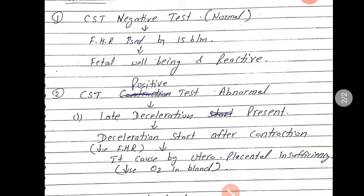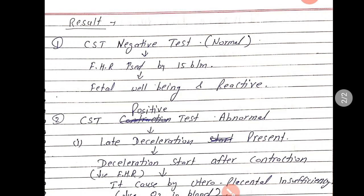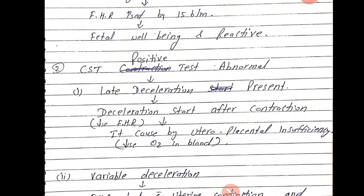CST has two results: first, CST negative test or normal; second, CST positive test or abnormal. In the CST negative (normal) result, fetal heart rate increases by 15 beats per minute during contractions, which is a sign of fetal well-being and indicates the fetus is reactive.